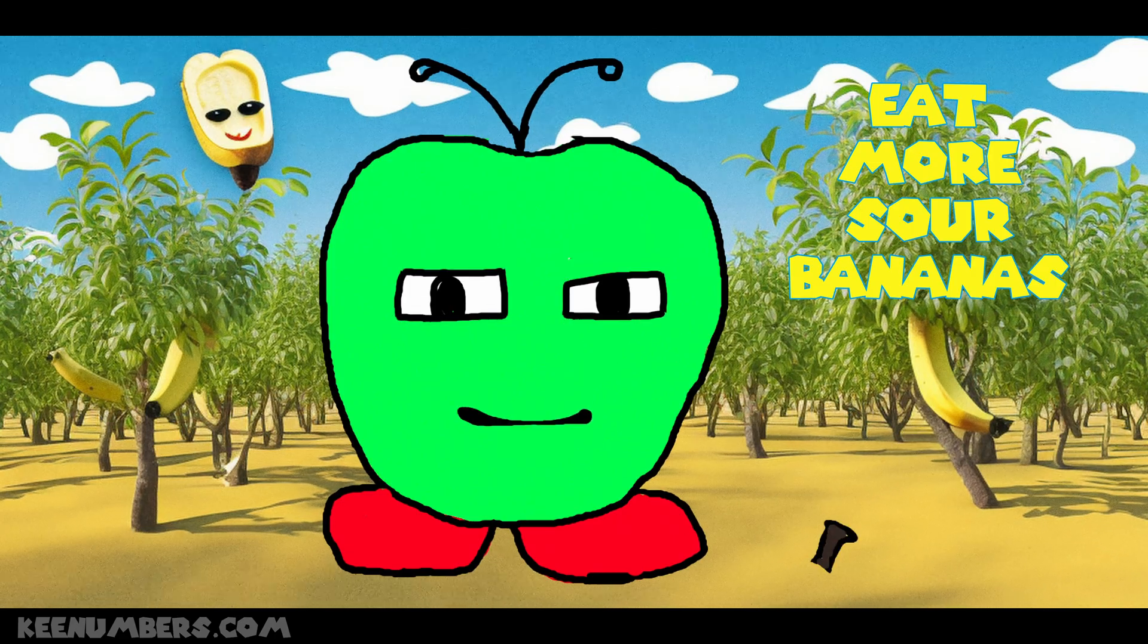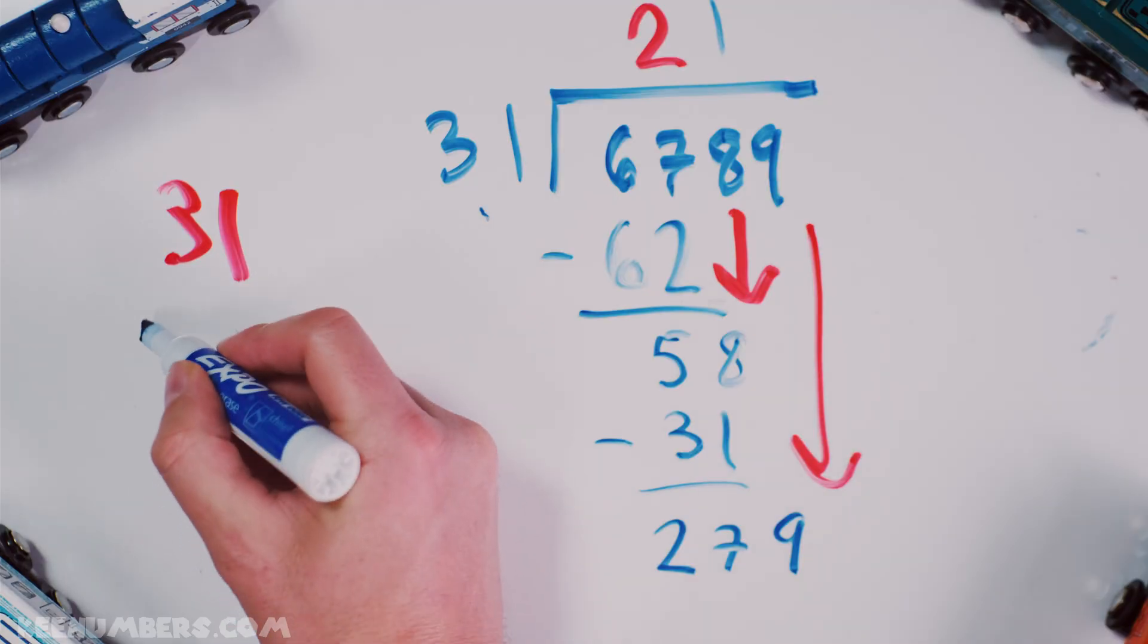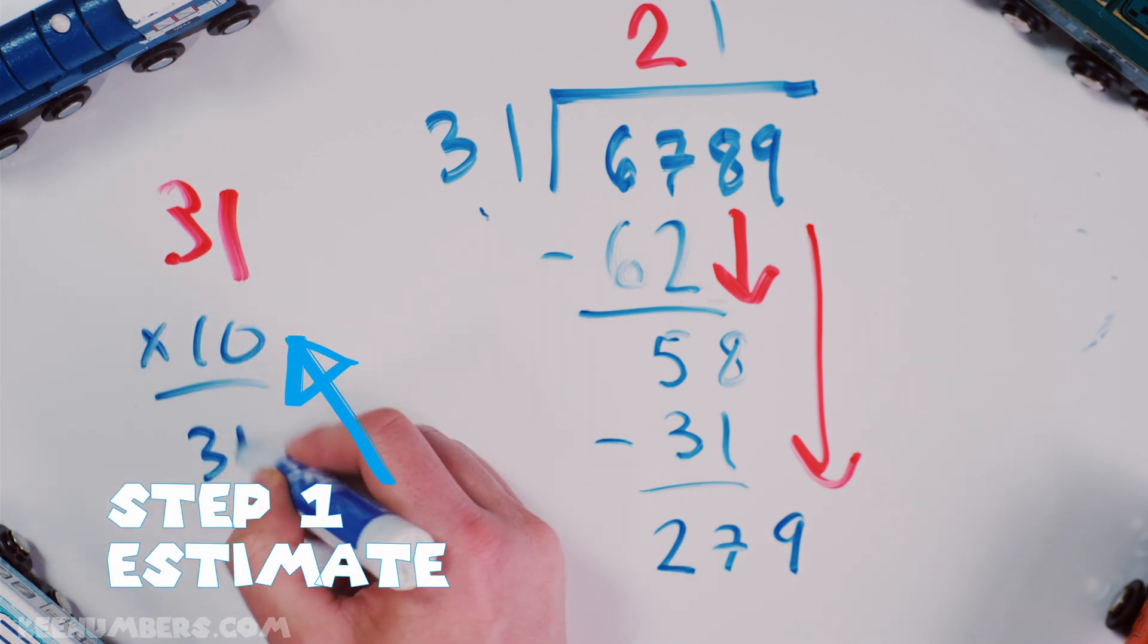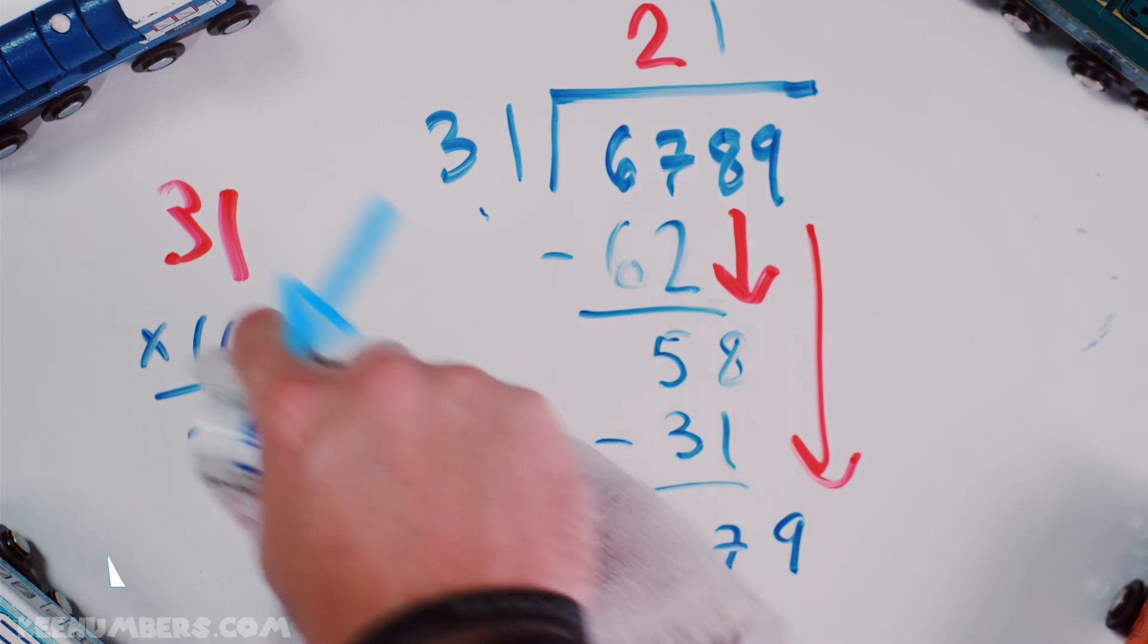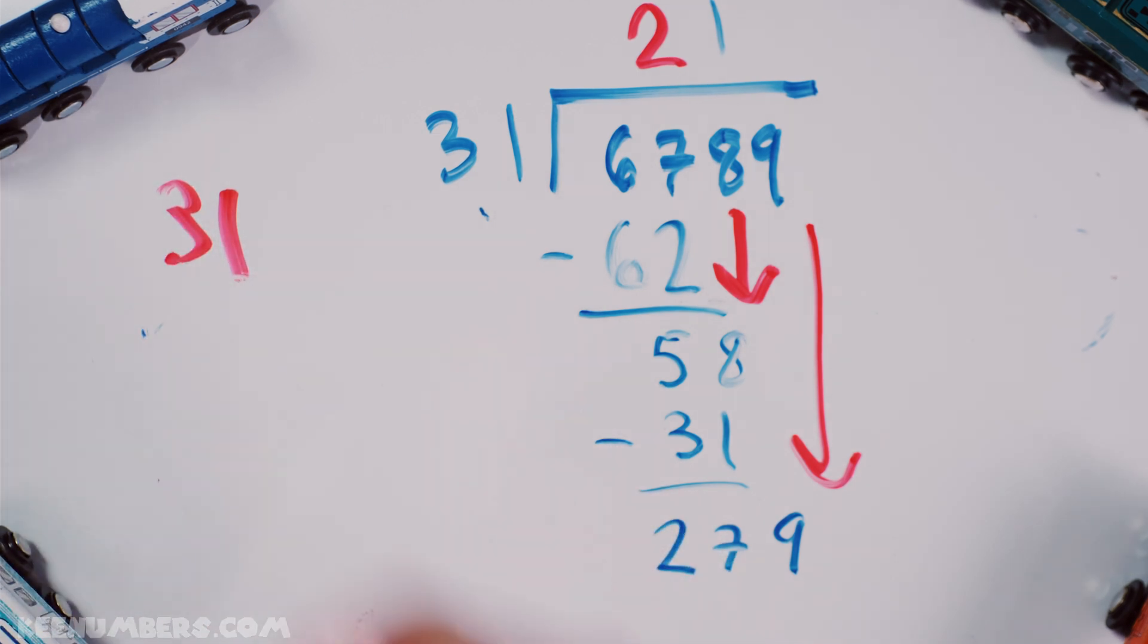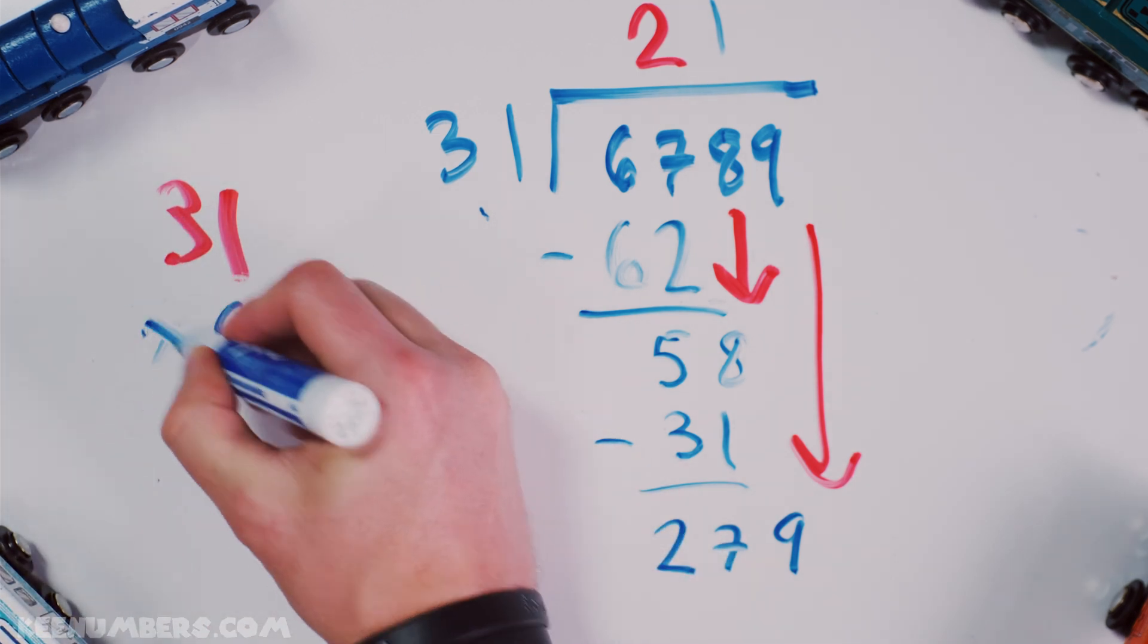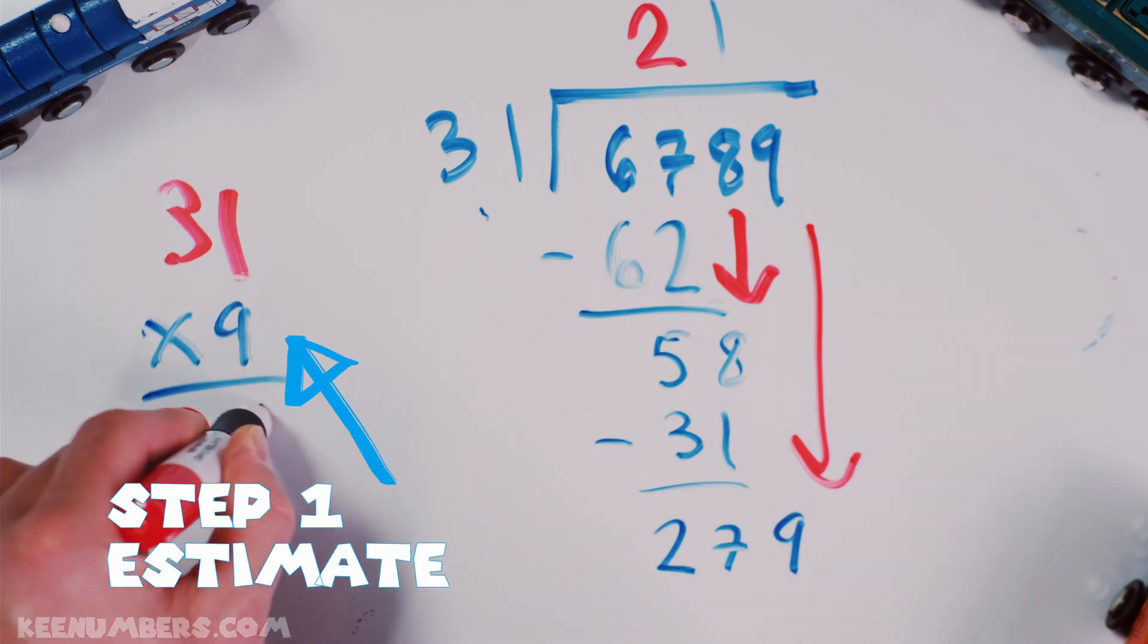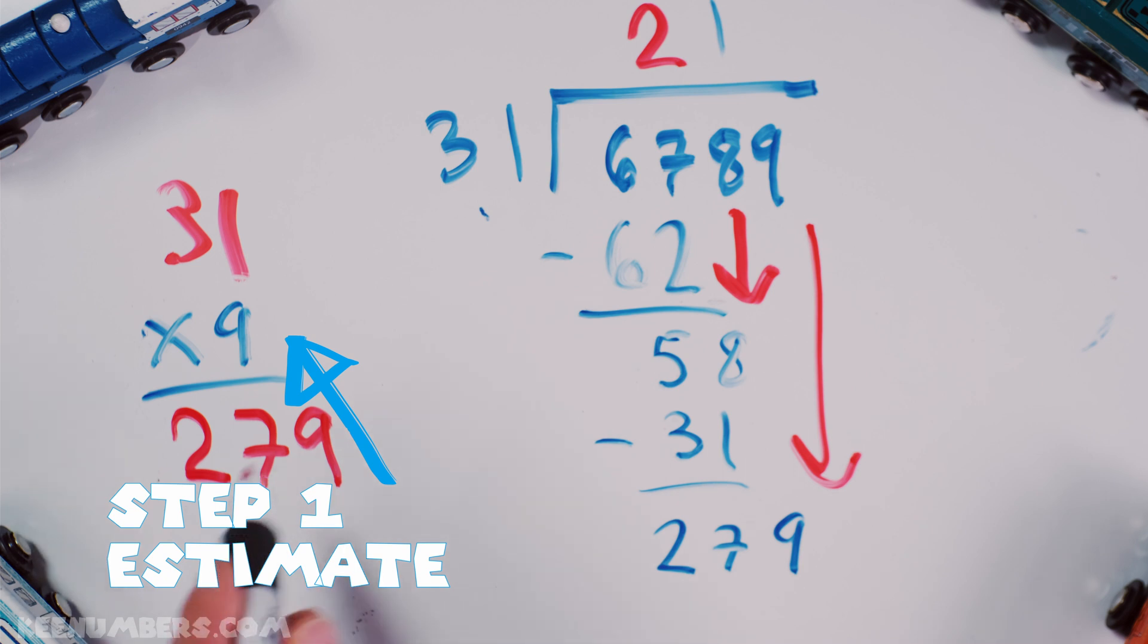31. 31 times 10. That's too big. That's gonna be 310. That's too big. But, here's the good news. 31 by 9. Oh, that's gonna be 27 and 9. 279.